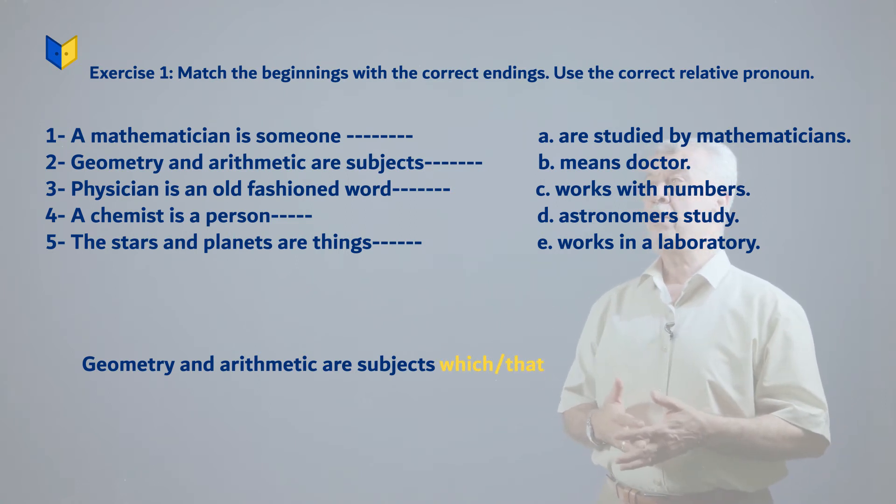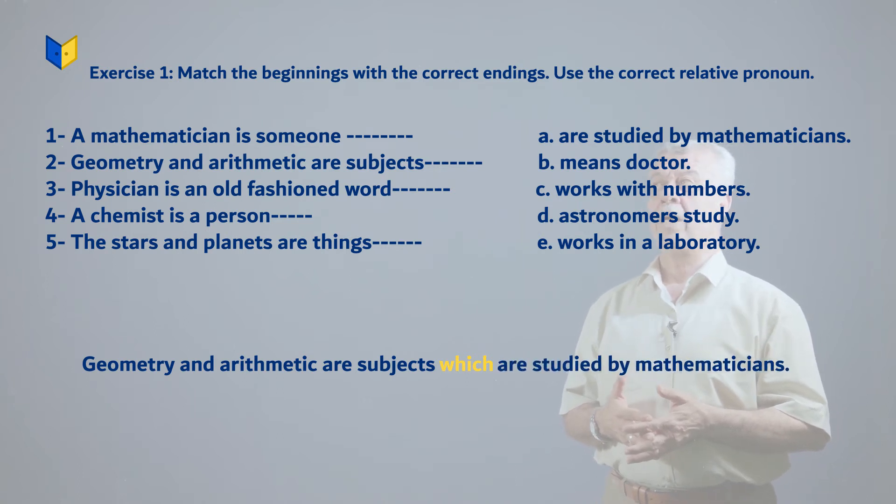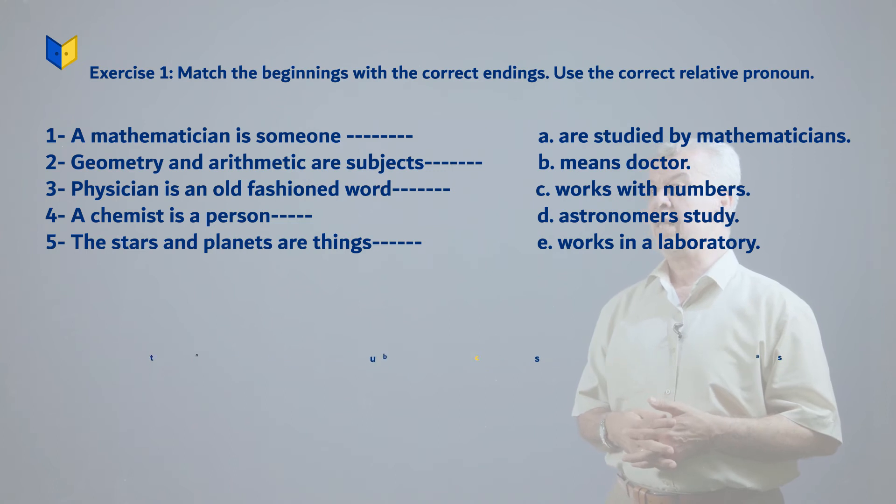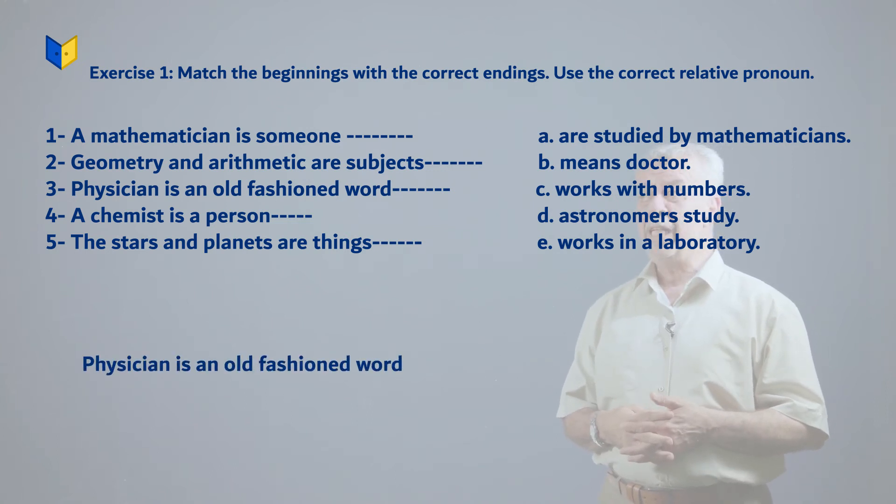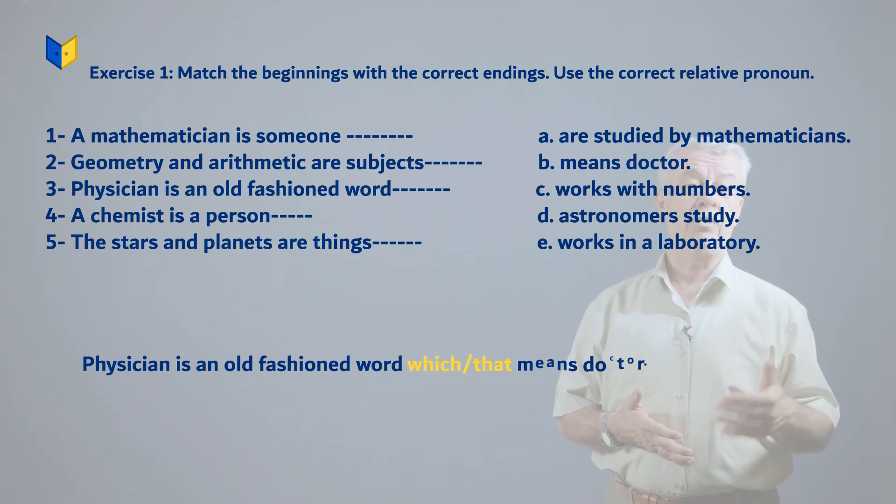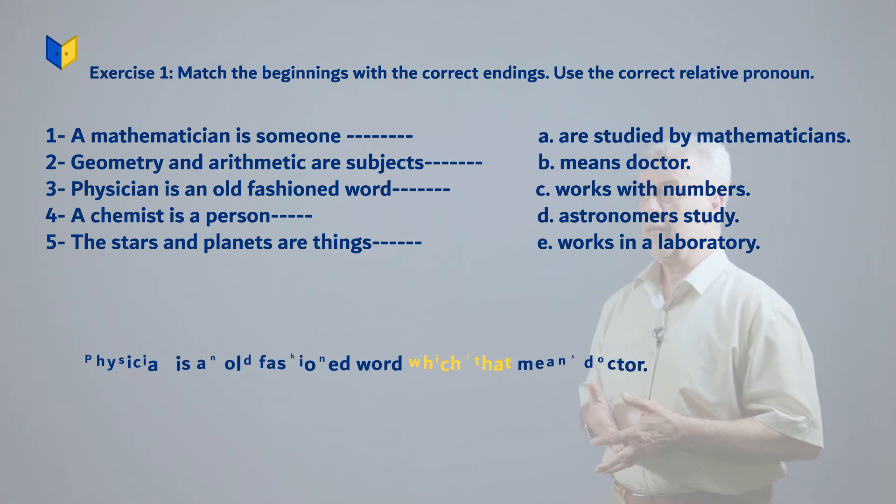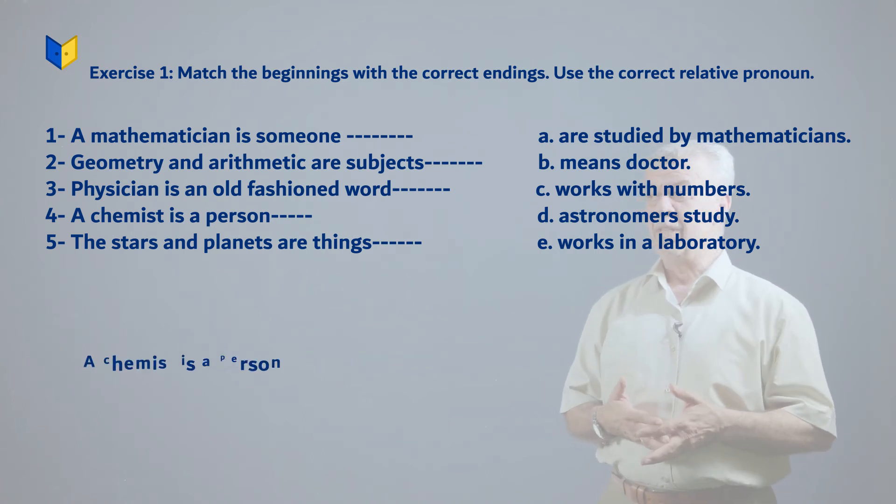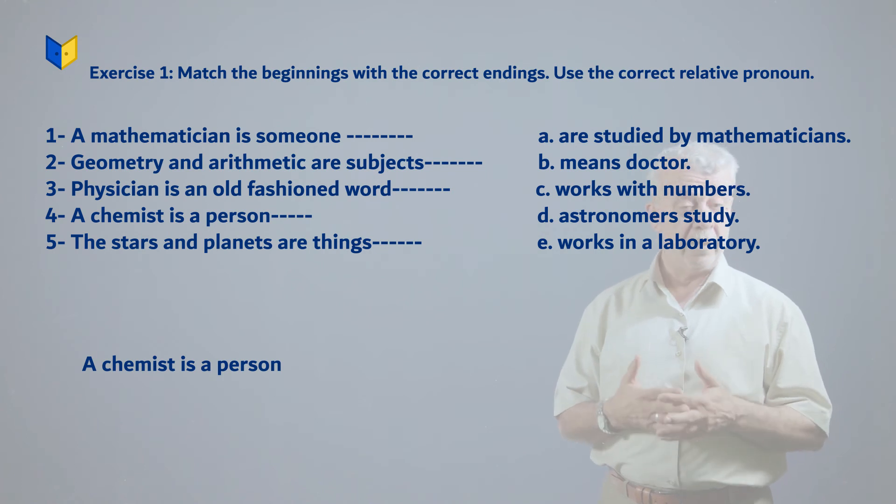Number three: Physician is an old-fashioned word. But the word is a thing, not a person, so which or that means doctor. Number four: A chemist is a person. Is someone, is a person, so the answer is who.